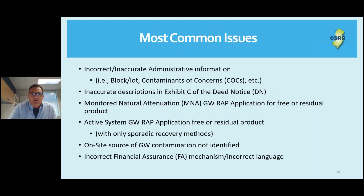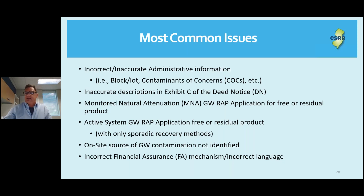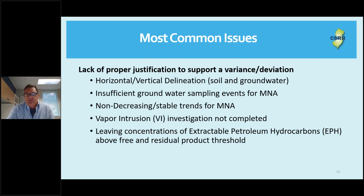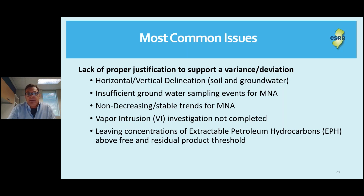Here is the list of common deficiencies: incorrect or inaccurate administrative information like block, lot, contaminants of concern; inaccurate descriptions in Exhibit C of the deed notice; MNA groundwater WRAP applications for free or residual product; an active groundwater WRAP application for free and residual product with only sporadic recovery methods; on-site source of groundwater contamination not identified; incorrect financial assurance mechanism or incorrect language; and lack of proper justification to support a variance or deviation.